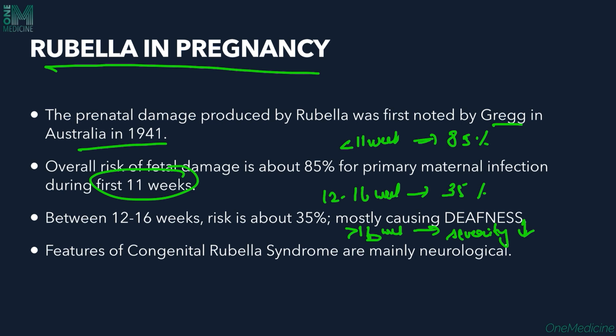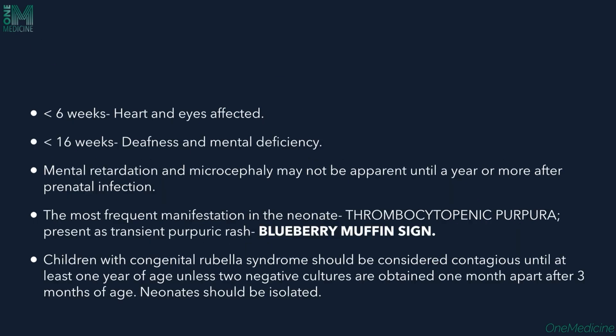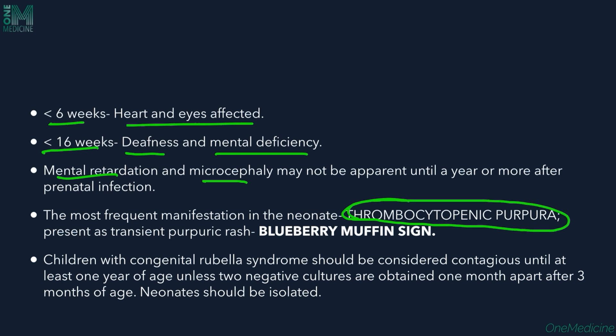The features of congenital rubella syndrome are mainly neurological — the CNS is mostly affected. If infection occurs before 6 weeks, heart and eyes will be affected; before 16 weeks, deafness and mental deficiency are seen. Mental retardation and microcephaly may not be apparent until one year or more after prenatal infection. The most frequent neonatal manifestation is thrombocytopenic purpura, which causes bluish-reddish lesions on the skin called the blueberry muffin sign.